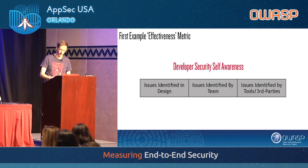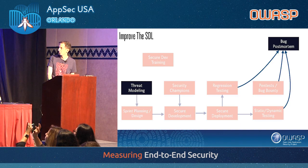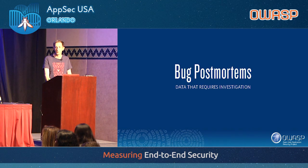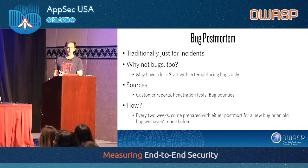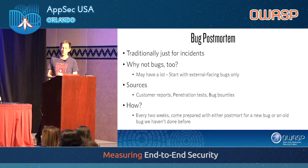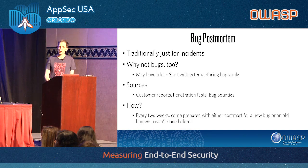To find this out we're adding a bug postmortem process into our SDL. We're modifying the bug postmortem and threat modeling — that'll be the end-to-end security part. This is really about getting the data we need to build better metrics. The bug postmortem has traditionally been used just for incidents, but we do it every two weeks where someone on the security team is assigned a bug and presents for five to ten minutes. We narrow it down to customer reports, penetration tests, and bug bounties — highs and criticals, not every single bug.